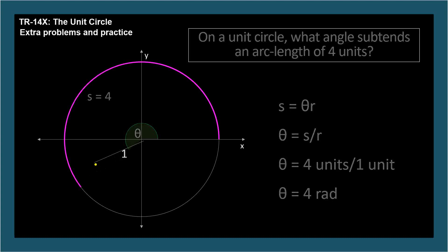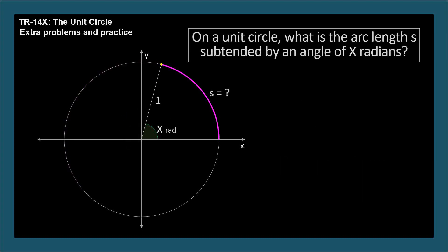On a unit circle, what's the arc length subtended by an angle of x radians? Arc length equals theta times radius. Since the radius is 1, the arc length equals theta. So on a unit circle, the arc length subtended by an angle of x radians is x units. S equals theta r, and on a unit circle, r becomes 1, leaving S equals theta.